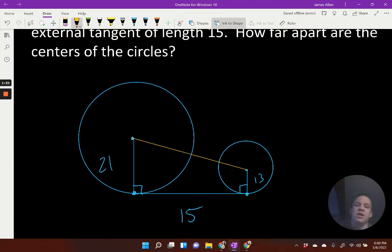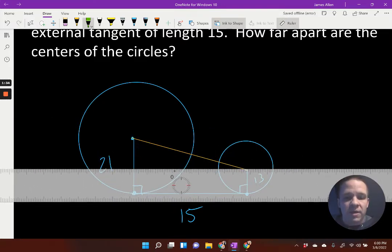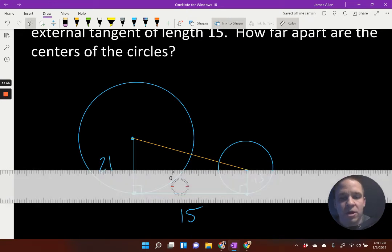So what I've actually just created is a trapezoid. Now what's helpful with trapezoids is if I were to cut this into a rectangle and a triangle, perhaps it would be a little bit easier to work with. Well, if I just run this thing horizontal here, parallel to that external tangent,